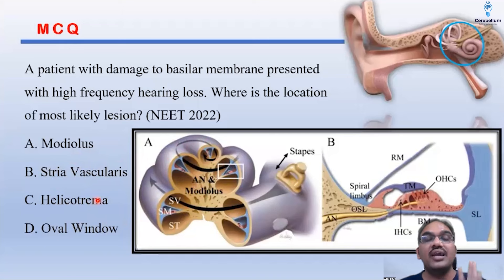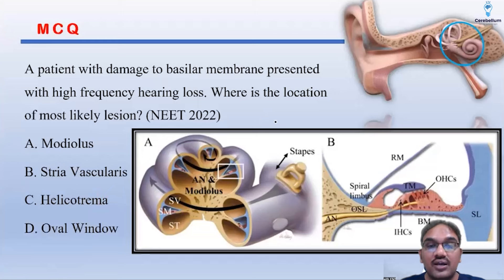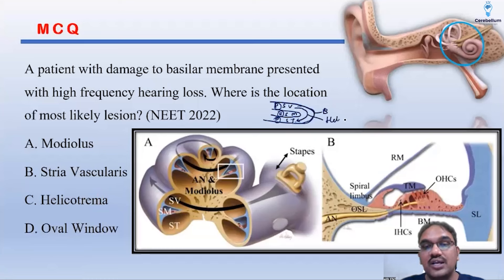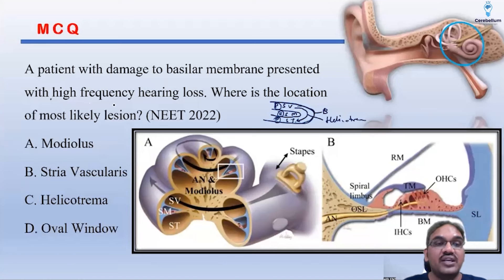Now, consider the helicotrema. At the apical coil of the cochlea, the outer structure is the bony labyrinth and inside is the membranous labyrinth. There is the scala vestibuli, scala tympani, and scala media. The scala vestibuli is continuous with the scala tympani at the apex — that junction is called the helicotrema. If the apical coil helicotrema is affected, then low frequency hearing loss should result. But the question says high frequency hearing loss.